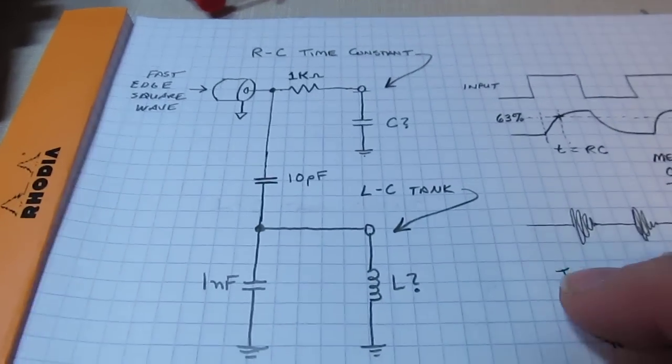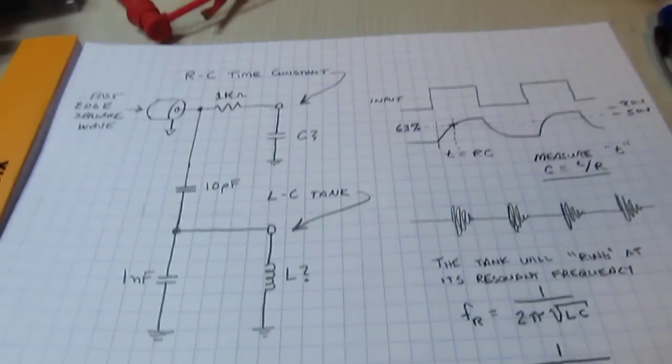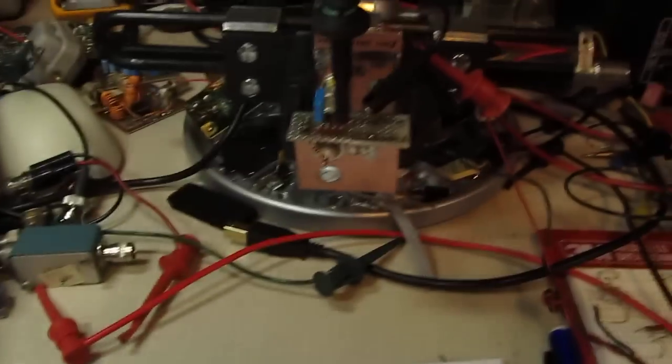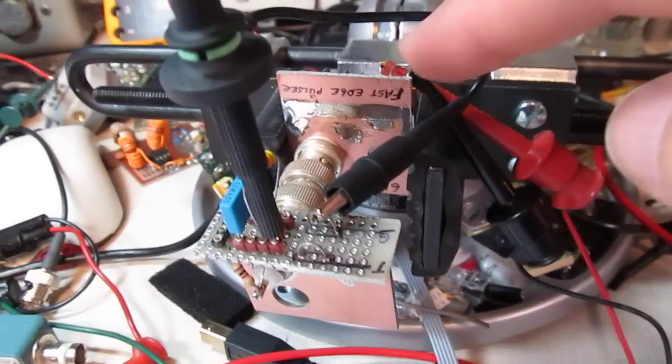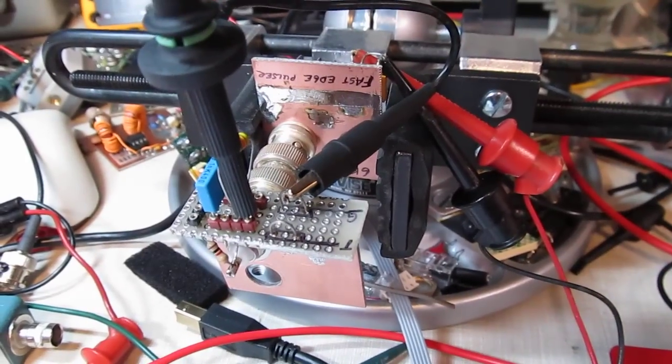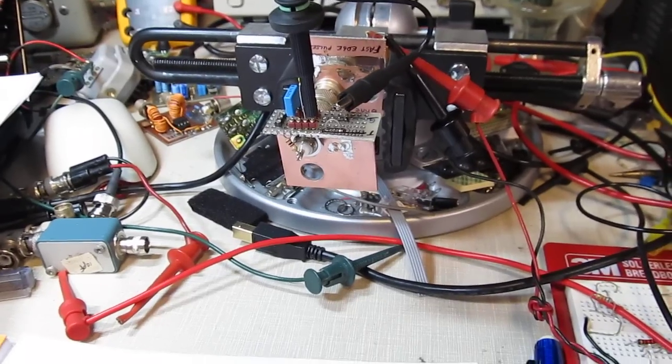Of course this process is only going to be accurate to within probably five or ten percent, but generally that's okay for making these measurements. So anyway, that's a pretty neat technique to use your scope to measure inductors and capacitors, and also get a dual use out of this fast edge pulse generator, which gives you another excuse for going to build that. Thanks again for watching and I appreciate any comments and feedback you might have. Take care.